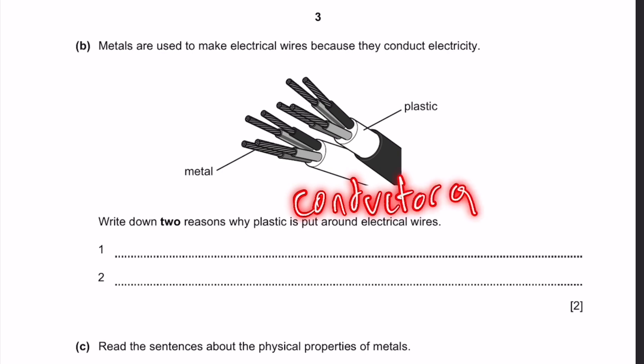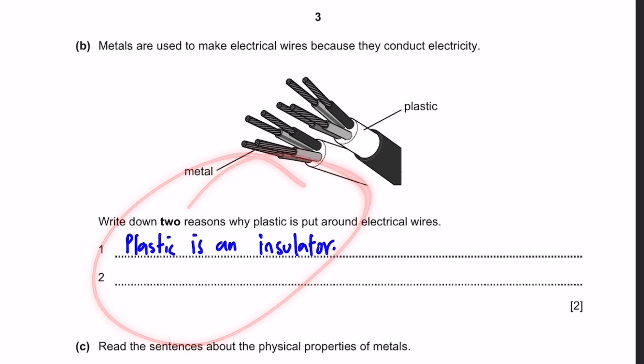It's a conductor of electricity. And we don't want to get shocked with electricity, right? That means that we need an insulator so that the electric current doesn't travel from the wires to our body in case we accidentally touch it. So that means that plastic is an insulator.